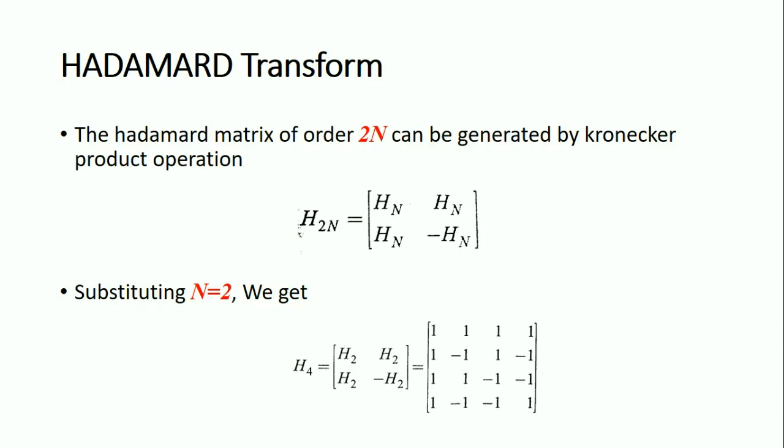When you are going for higher order Hadamard matrices, the Hadamard matrix of order 2N can be generated by the Kronecker product operation as H2N equals the matrix [HN, HN; HN, -HN]. If you substitute N=2, then 2 times N equals 4.